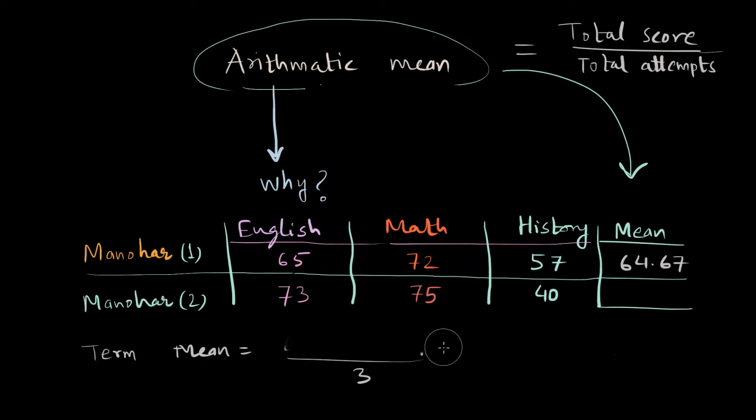For term two the mean for Manohar's marks is 73 plus 75 plus 40 divided by 3. This 3 refers to 3 papers that he appeared for and this comes out to be 188 divided by 3.